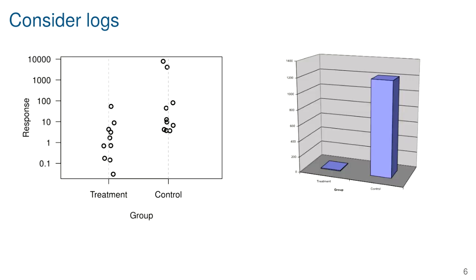Showing just the average in each group — especially in 3D — is a kind of criminal distortion of the information, because the average is totally dominated by the two large numbers in the control group. What you're seeing in that plot is nothing like what the data are actually showing.